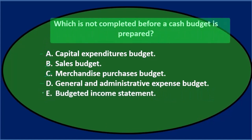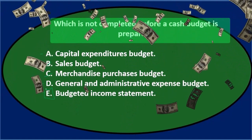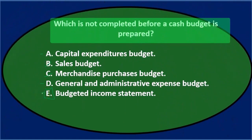Which is not completed before a cash budget is prepared? Either A — capital expenditures budget, D — general and administrative expense budget, or E — budgeted income statement. Of those three, I would think E is the last thing we're going to do. The final product is basically the balance sheet and income statement, so it can't be the case that we'd complete that before the cash budget. The cash budget is towards the end, but the final product is the budgeted financial statements. Final answer: E.